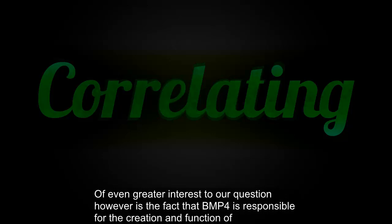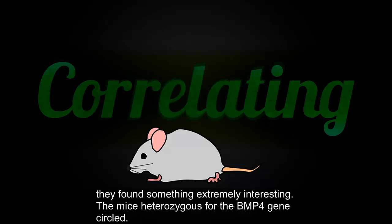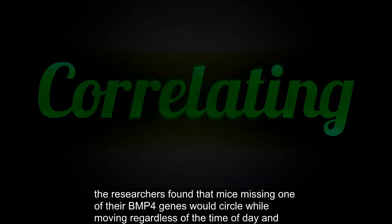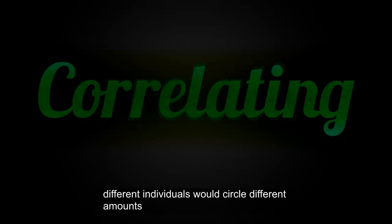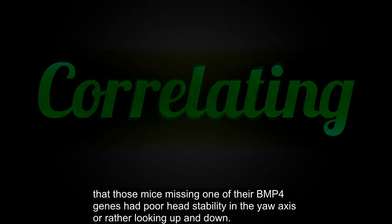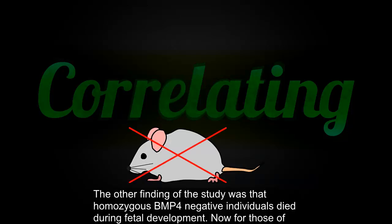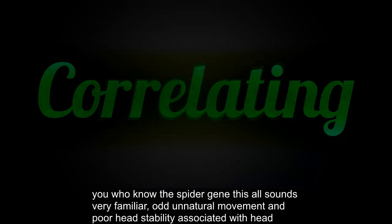Of even greater interest to our question is the fact that BMP4 is responsible for the creation and function of the inner ear. When a group of researchers decided to test the role of BMP4 on inner ear function in mice, they found something extremely interesting — the mice heterozygous for the BMP4 gene circled. The researchers found that mice missing one of their BMP4 genes would circle while moving, regardless of the time of day, and different individuals would circle different amounts. This was attributed by the researchers to a lack of balance. They also found that those mice missing one of their BMP4 genes had poor head stability in the yaw axis — or rather looking up and down. The other finding of the study was that homozygous BMP4-negative individuals died during fetal development.